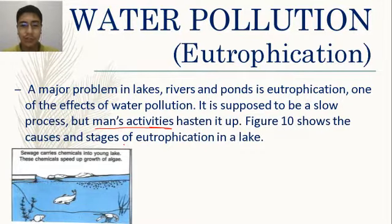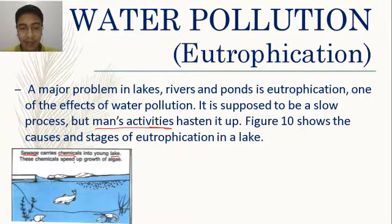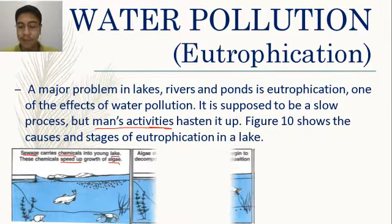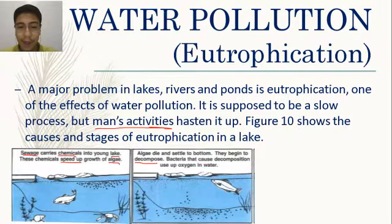The following figure shows the causes and stages of eutrophication in a lake. Sewage carries chemicals into the lake; these chemicals speed up the growth of algae. The algae then die and settle to the bottom, where they begin to decompose.